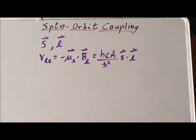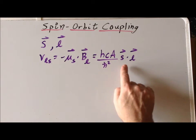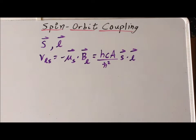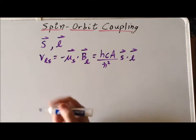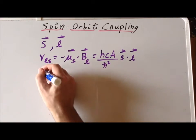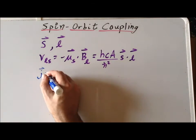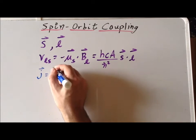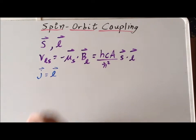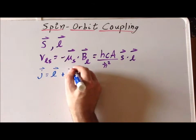Ultimately, we are going to want to derive expressions for the value of the interaction of the S vector with the L vector. To do that, it's helpful to introduce a new type of angular momentum — the total angular momentum — for which we use the symbol J, which is a vector sum of the orbital angular momentum and the spin angular momentum.